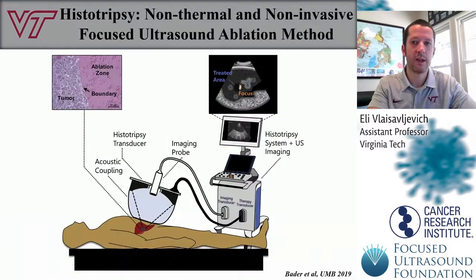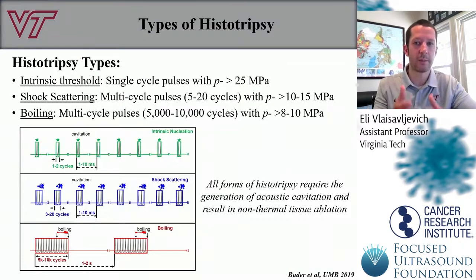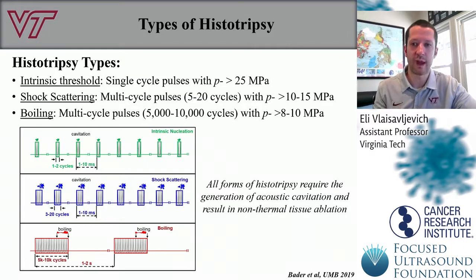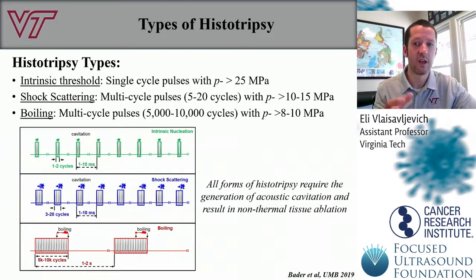Next, we're going to change gears and talk about histotripsy. Histotripsy is a completely non-invasive and non-thermal ablation method that uses focused ultrasound to generate a cavitation bubble cloud, which results in the mechanical ablation of tissue into acellular debris with very high precision. There are three different types of histotripsy: intrinsic threshold histotripsy uses single cycle pulses at very high pressures greater than 25 MPa peak negative pressure; shock scattering uses multi-cycle pulses between 5 and 20 cycles with peak negative pressures of about 10 to 15 MPa; and boiling histotripsy uses much longer pulses with slightly lower pressure to rapidly heat the tissue and generate a boiling bubble. All types use very low duty cycles to avoid any thermal damage to the tissue.